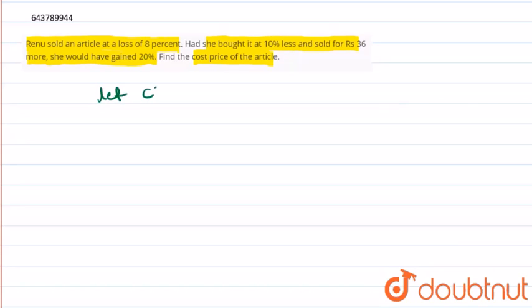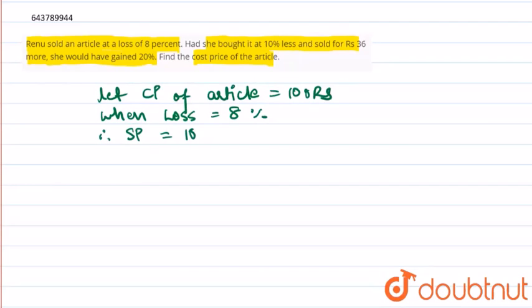From the given information, let the cost price of the article equal to 100 rupees. When there was a loss of 8 percent, the selling price of the article is 100 minus 8 equal to 92 rupees.